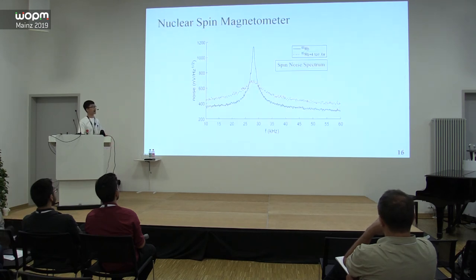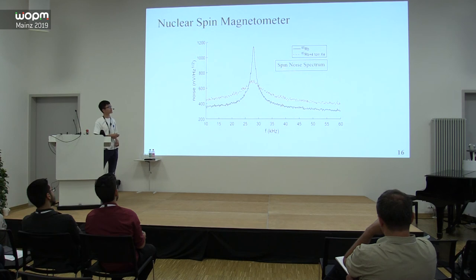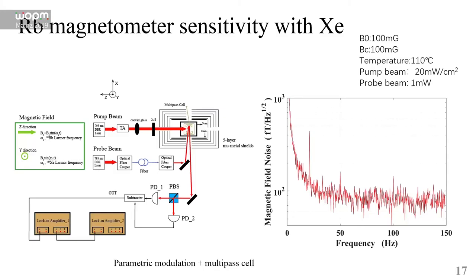We also applied a multi-pass cell inside a nuclear spin magnetometer. As we can see from the spin noise spectrum, the line width is broadened greatly when xenon atoms exist, so it will be quite necessary and important to introduce a multi-pass cell to improve the sensitivity. This figure shows us that the sensitivity of rubidium magnetometer with xenon can still be less than 100 femtotesla per square root hertz.